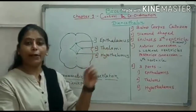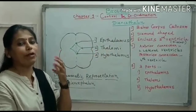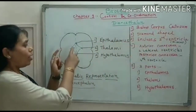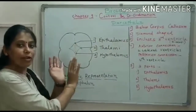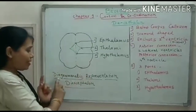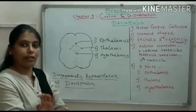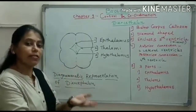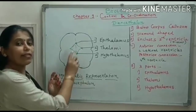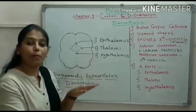First let us study the introduction of Diencephalon — where exactly it is present in the brain. It is present below the corpus callosum. This diamond-shaped structure that I have drawn is the Diencephalon. This is a diagrammatic representation of the human brain — it is not the actual figure. Somewhere here the Diencephalon is present, just below corpus callosum.